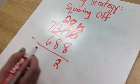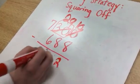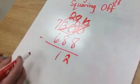So 10 take away 8 is 2, and 9 take away 8 is 1, and 2 take away 6. You can't do that.